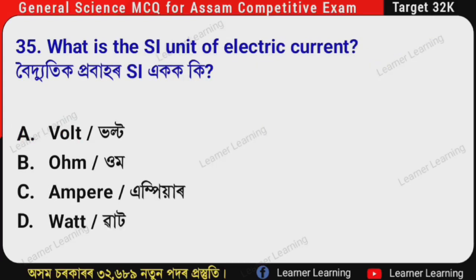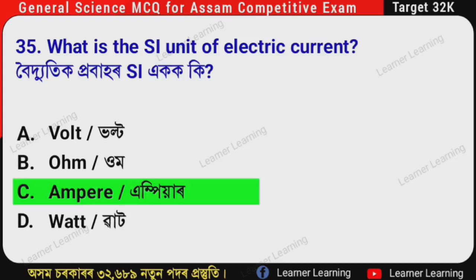Next question: What is the SI unit of electric current? (Assamese: Vaidyotik prava har SI echo ki?) The correct option is Option C — Ampere. The SI unit of electric current is Ampere.